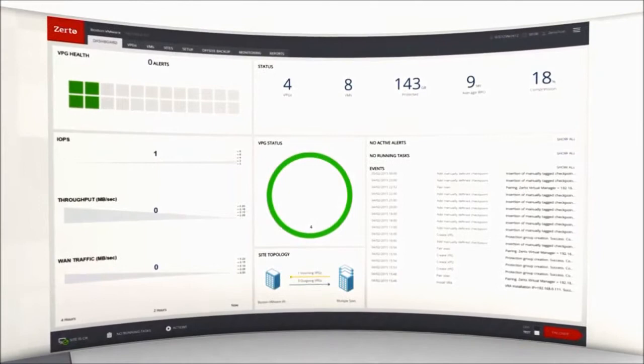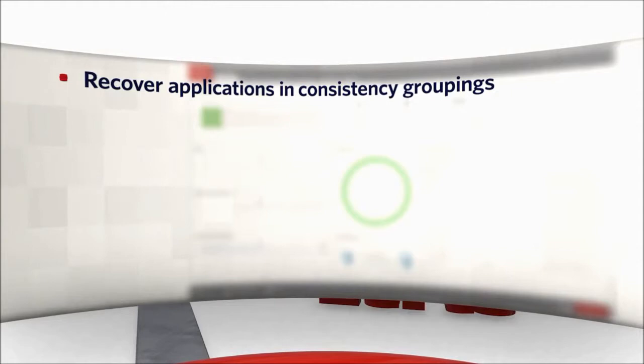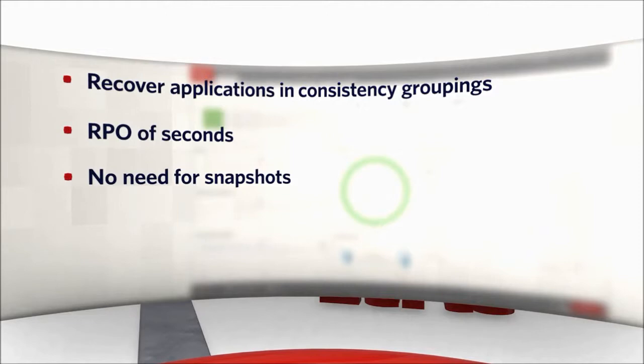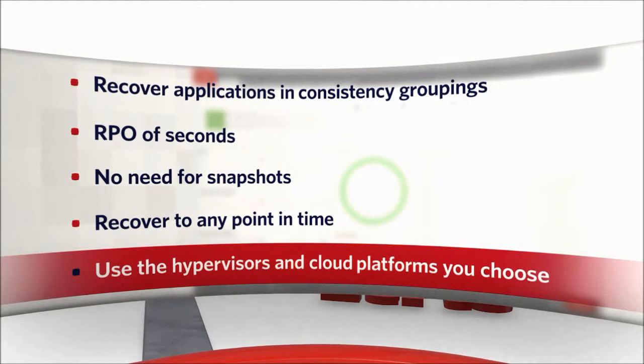We've created a new HTML5 user interface which gives you consistent management and control of your BCDR, irrespective of the underlying hypervisor. Just as before, you can protect and recover your applications in consistency groupings with an RPO of seconds without using snapshots. You can recover to any point in time down to the nearest second, and this can now all be done using the hypervisors, cloud platforms, SLAs and costs your business demands.